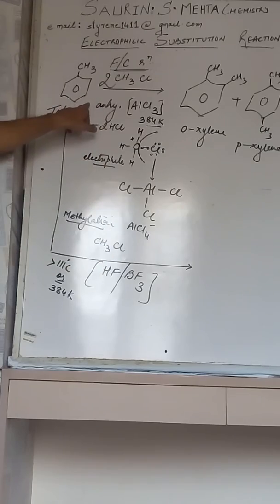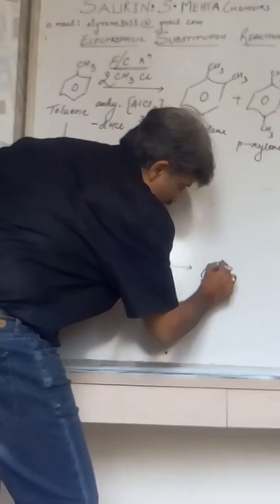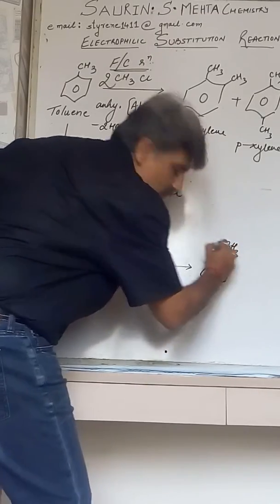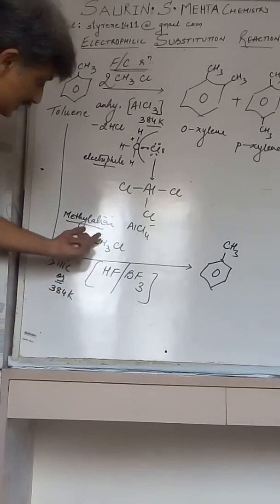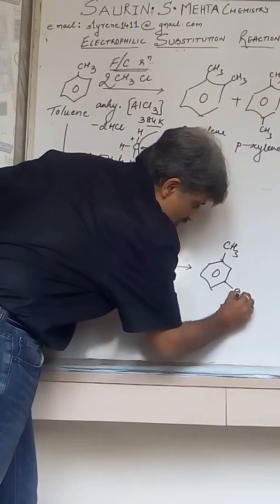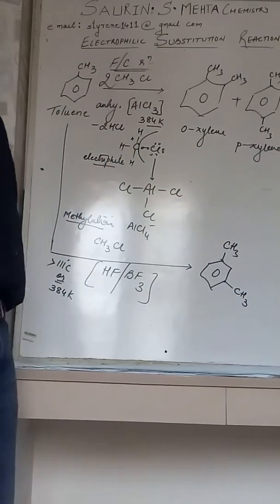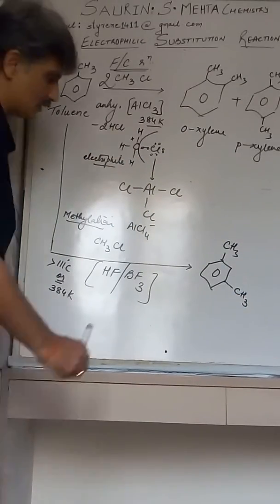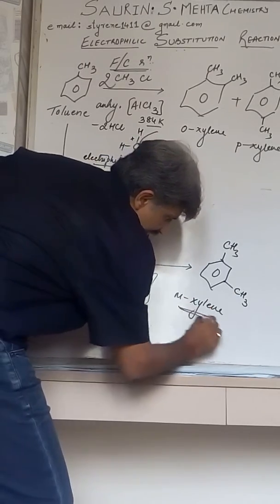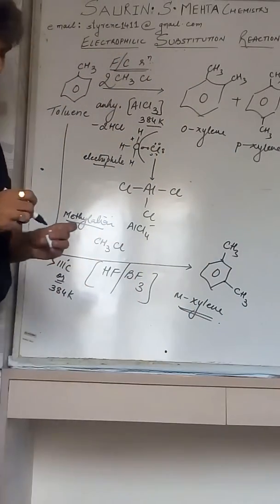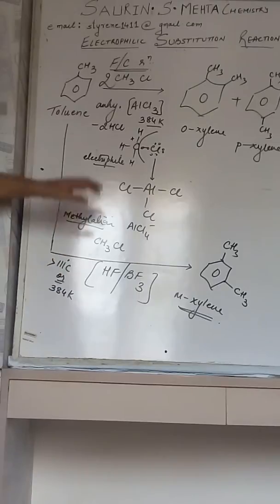So mind you, even though the already existing group, that is methyl group, is OP directing group, the incoming methyl group due to presence of HF-BF3 gets directed on to the meta position and the compound obtained is meta xylene. This is an exceptional case in the electrophilic substitution reaction where even though the group is an OP directing group, there is change in the catalyst - a heavy catalyst with electronegative effect.